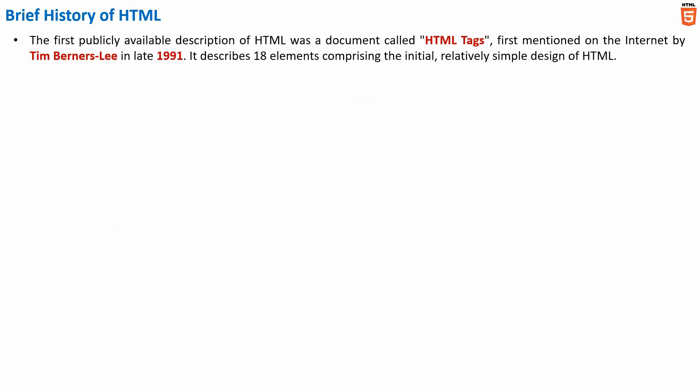HTML was first created by Sir Tim Berners-Lee in late 1991. This first publicly available description of HTML was a document called HTML Tags, which described 18 elements comprising the initial, relatively simple design of HTML.